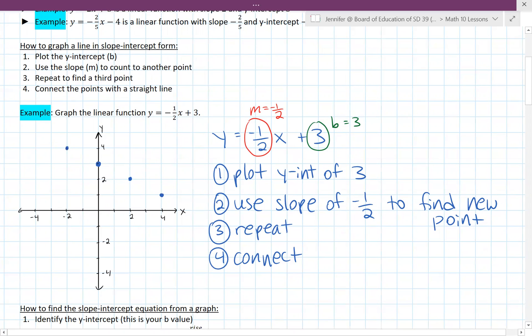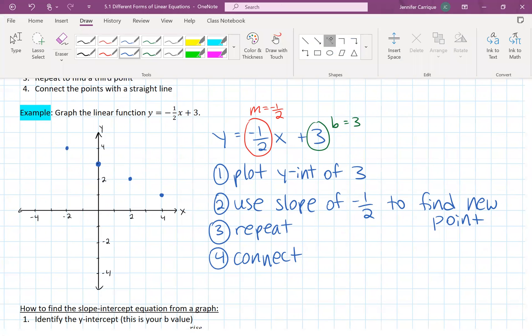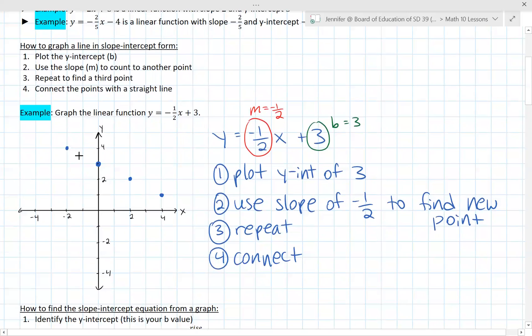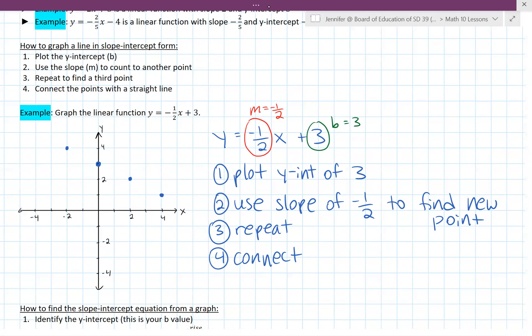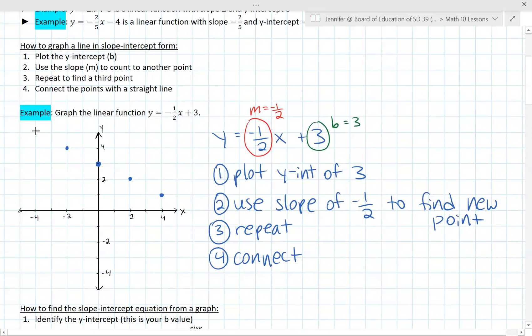We could also have gone the other way, up one over two this way. That's fine too. And then we will connect them with a straight line. So that's how you can graph lines given to you in slope-intercept form.